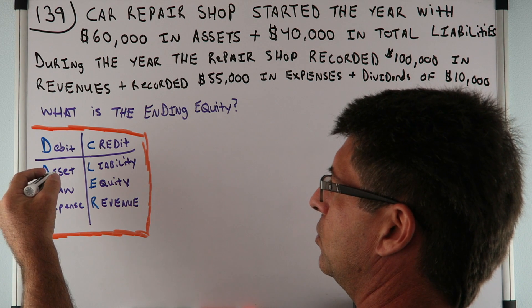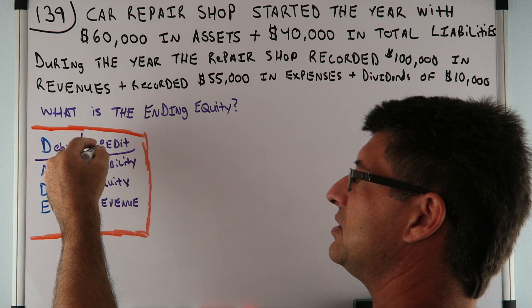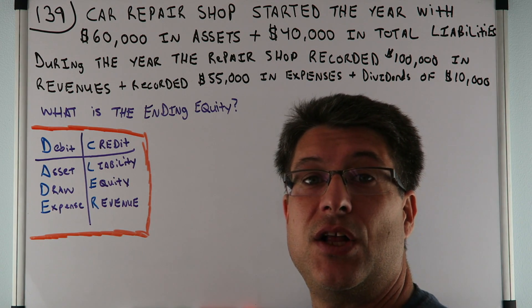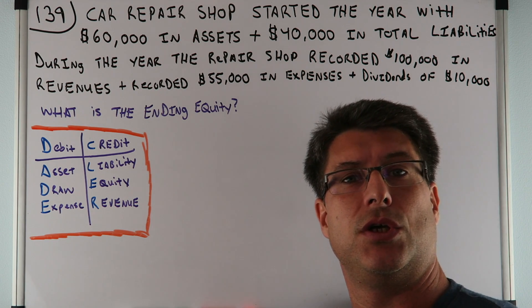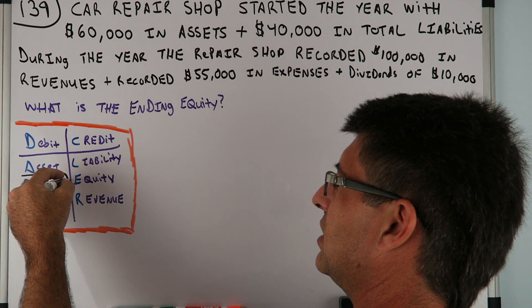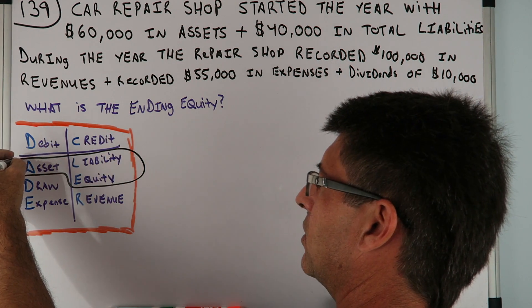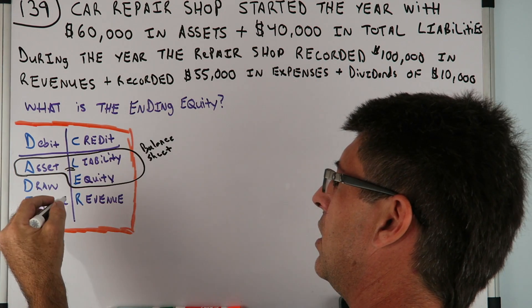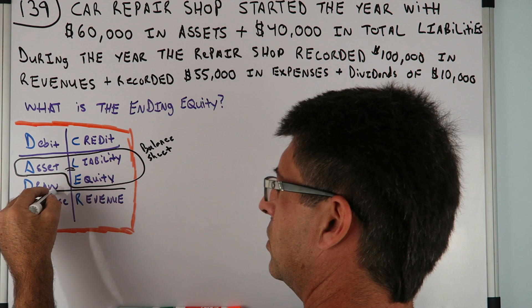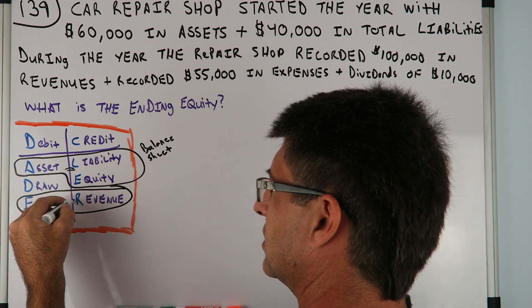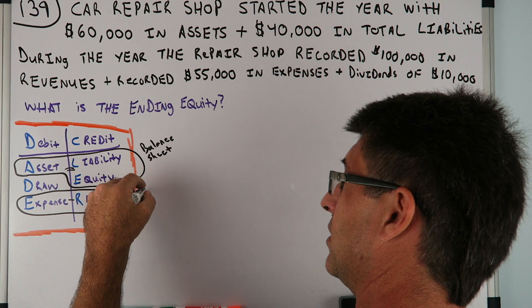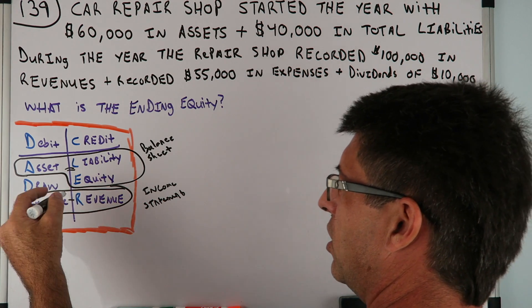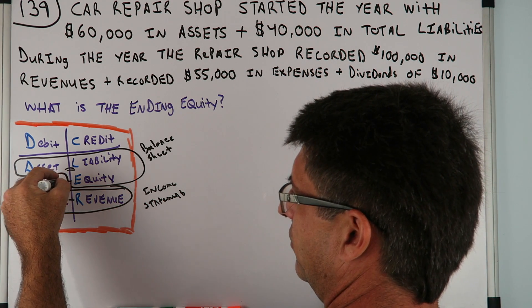This is another reason why I like DC AIDLER as opposed to other formats. Assets equal liability plus equity — that's the balance sheet. And revenue minus expenses is the income statement there. Draw is a reduction of equity; it reduces equity.